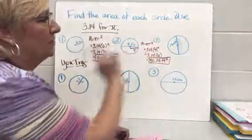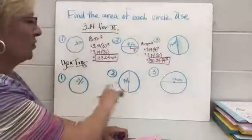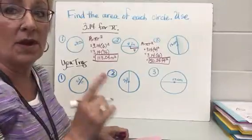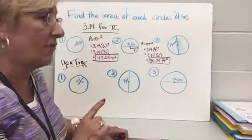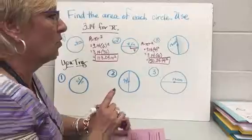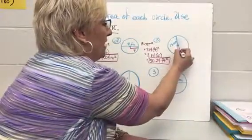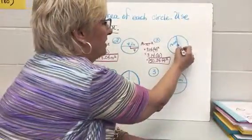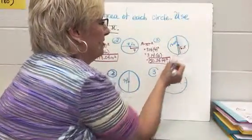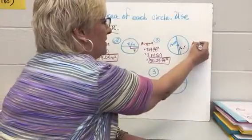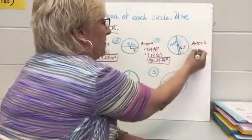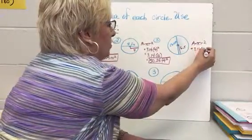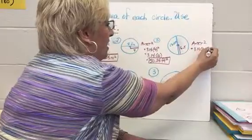Now I'm going to do number three and then let you try the bottom ones. Thirteen centimeters is the diameter, so I need half of that. It's easier to work with decimals — half of thirteen is 6.5 centimeters. So area equals pi r squared: 3.14 times 6.5 squared.